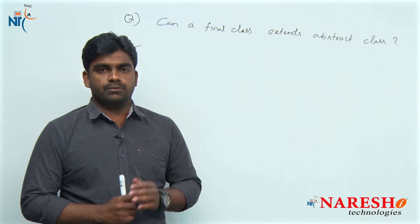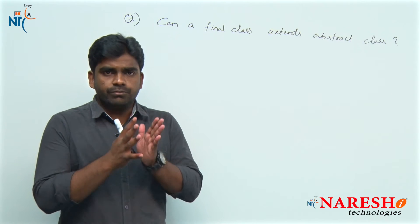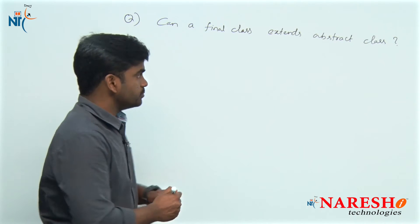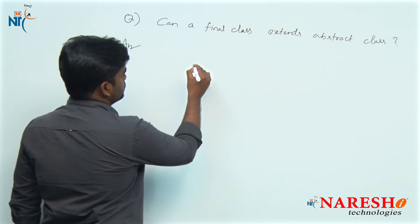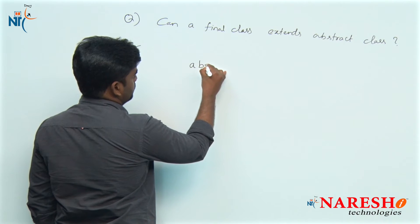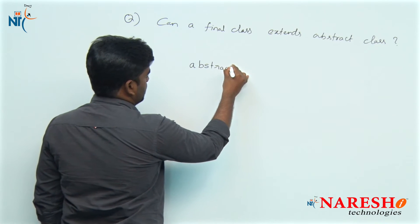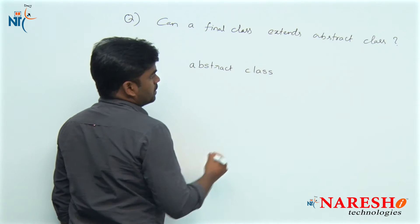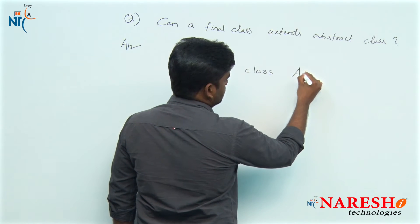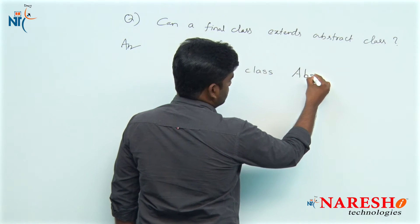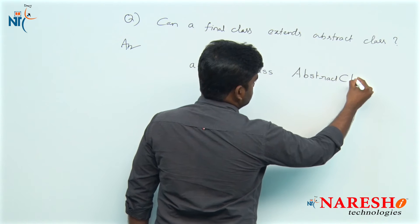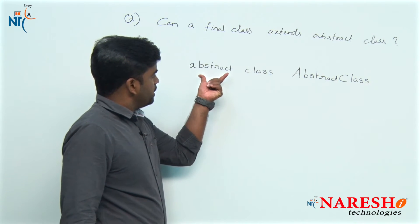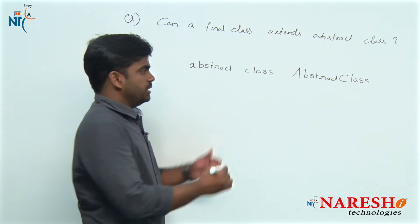An abstract class is not fully defined — it is a partial representation of an object. We are taking one abstract class here to understand. Abstract classes need to be defined with the help of the abstract modifier.